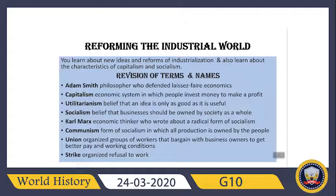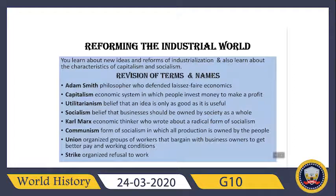Karl Marx — an economic thinker who wrote about a radical form of socialism. Communism — a form of socialism in which all production is owned by the people. Union — an organized group of workers that bargains with business owners to get better pay and working conditions. Strike — an organized refusal to work.